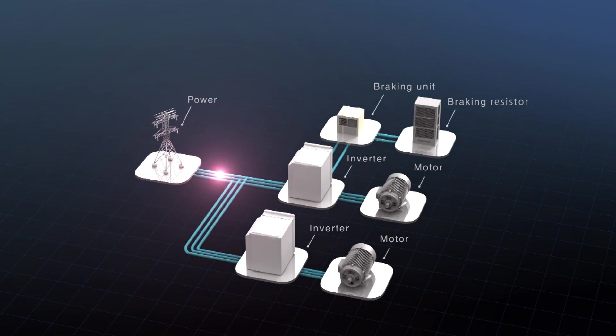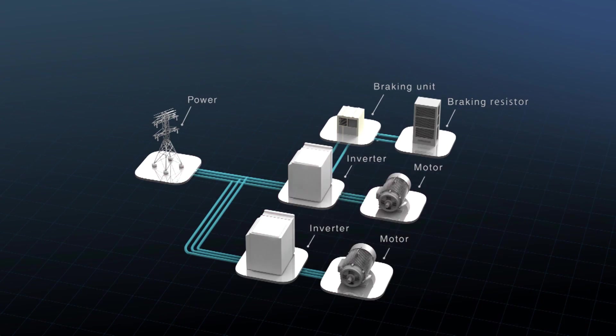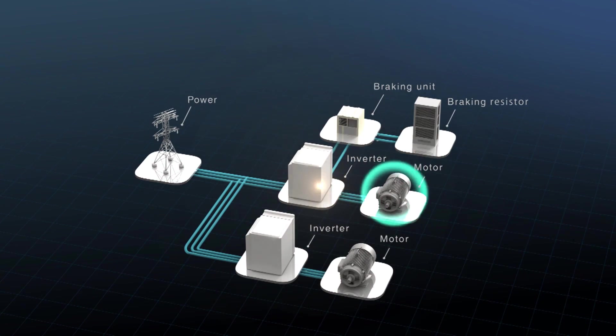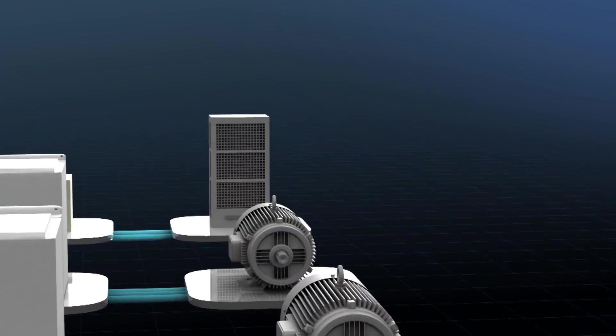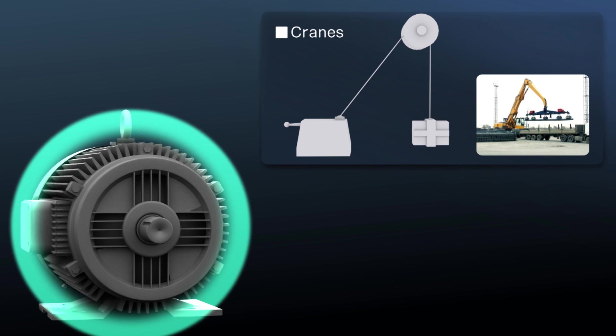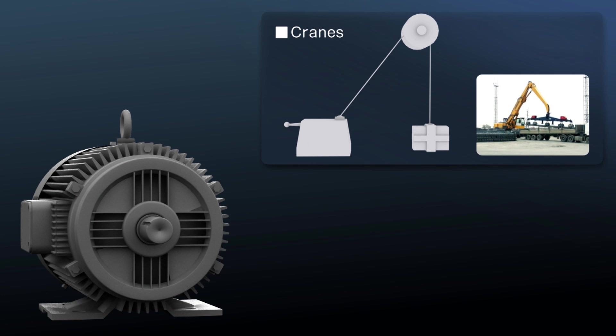Motors normally consume energy, but sometimes energy flows backwards when a motor shaft is turned by an external force. For example, a lifting application such as a crane consumes energy when the load is lifted up. However, it delivers energy or regenerates when the load is lowered.